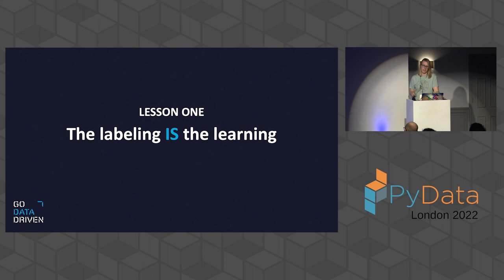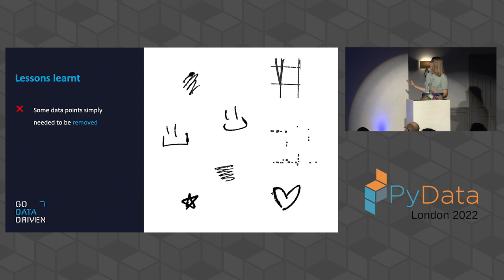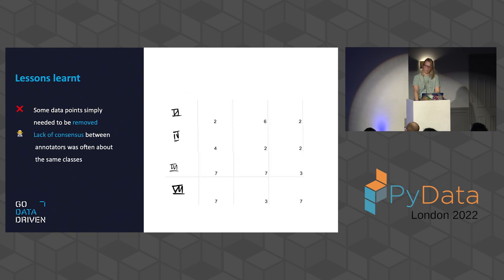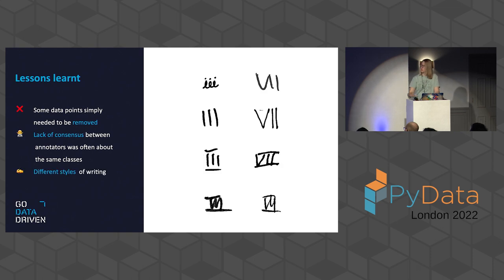That taught us something very important: the labeling is the learning. Manually going through the data gave us a much better understanding of the problem. We noticed that some data points simply didn't belong in the training set at all — noisy data points that needed to be removed. We also learned that lack of consensus between annotators was consistently about the same classes — we often confused sevens for threes and twos for sixes. We also noticed a distinct difference in writing styles in the dataset.